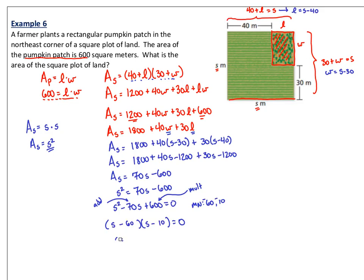I have factors of S minus 60 and S minus 10. My first mini equation, S minus 60 equals 0, gives me S equals 60. Second mini equation, S minus 10 equals 0, gives me S equals 10. Let's go back and check. If I plug in S equals 10, 10 minus 40 gives me a length of negative 30. That's not a very happy farmer. So this S equals 10 is not acceptable. We want positive measurements only.